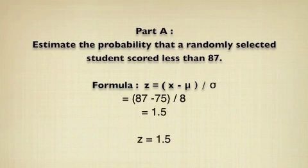The first part of the question tells us to estimate the probability that a randomly selected student scored less than 87. The formula that you would use is z equals x minus mu divided by lowercase sigma. When you do it, you would get z equal to 1.5.